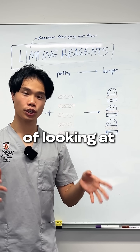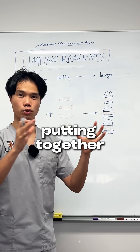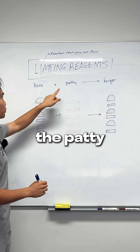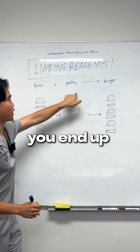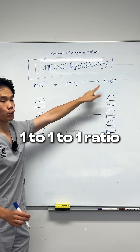To make things easier, instead of looking at a reaction, let's look at the act of putting together a burger. If you react a bun with a patty, you end up with a burger, and they react in a 1 to 1 to 1 ratio.